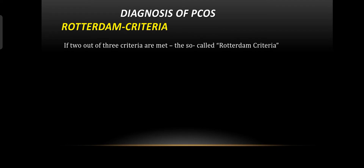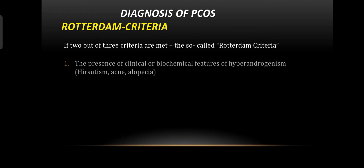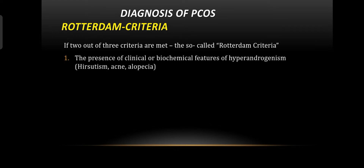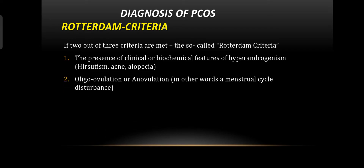What is the Rotterdam criteria? If two out of three criteria are met, it is called the Rotterdam criteria for the diagnosis of PCOS. The first criterion is the presence of clinical or biochemical features of hyperandrogenism — which covers hirsutism, acne, and alopecia. The second is oligo-ovulation or anovulation, in other words menstrual cycle disturbance.